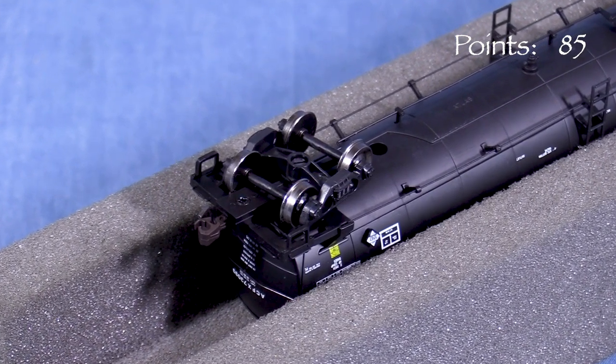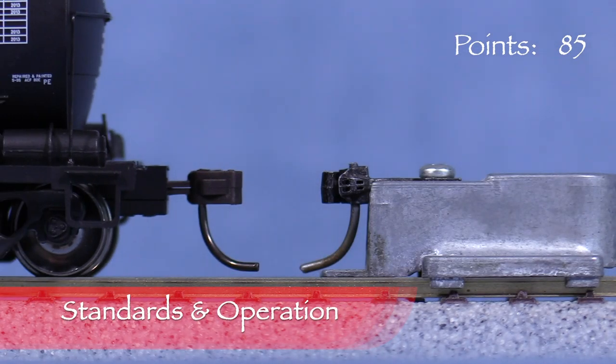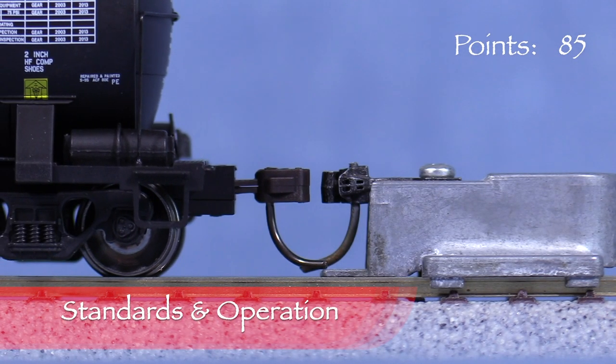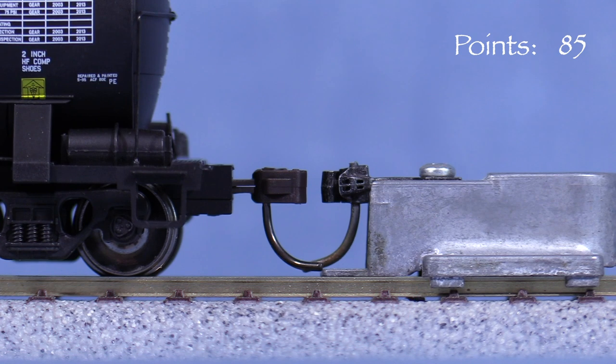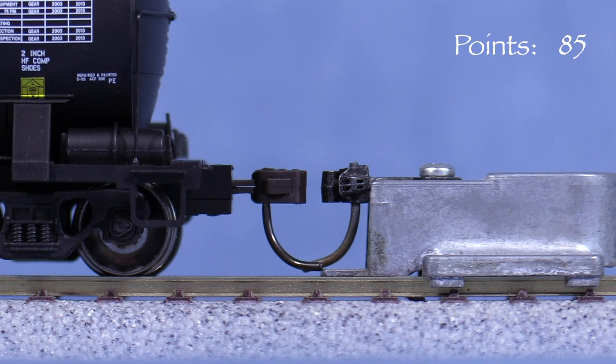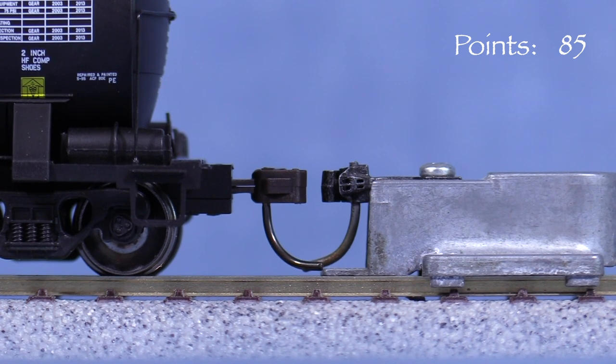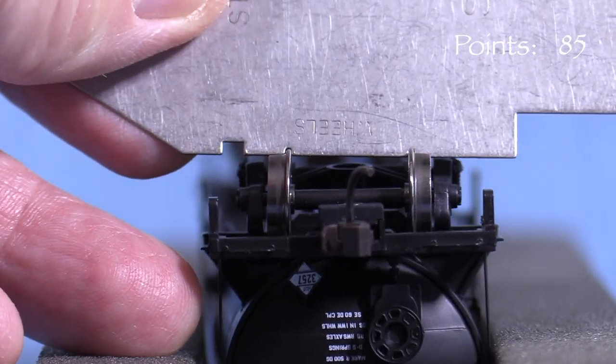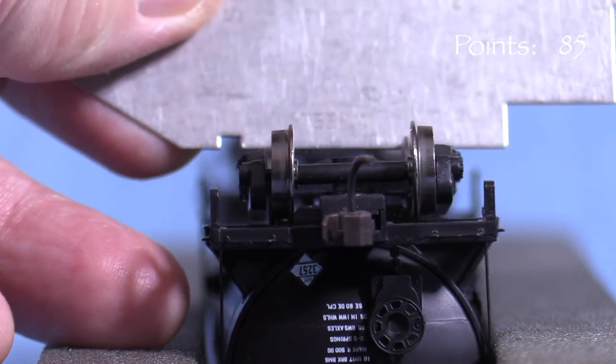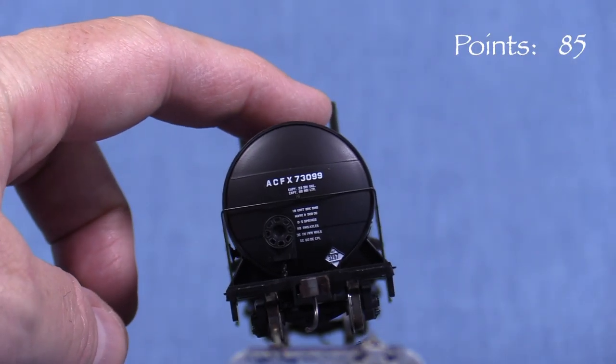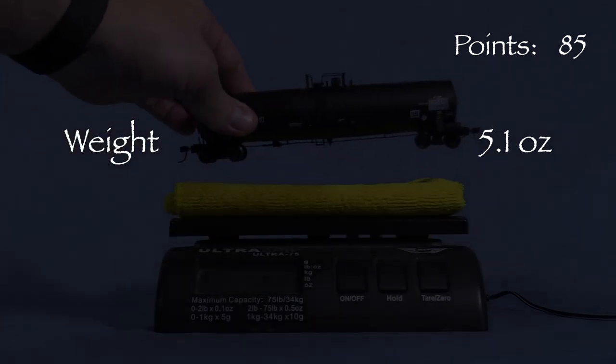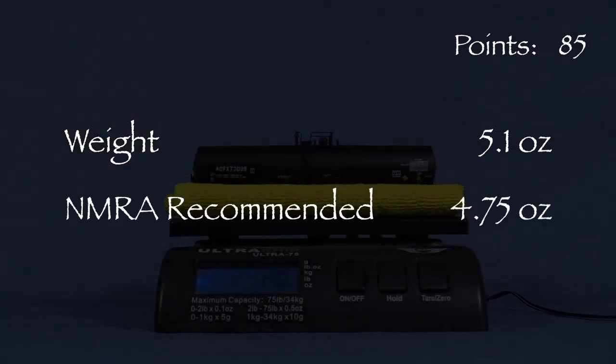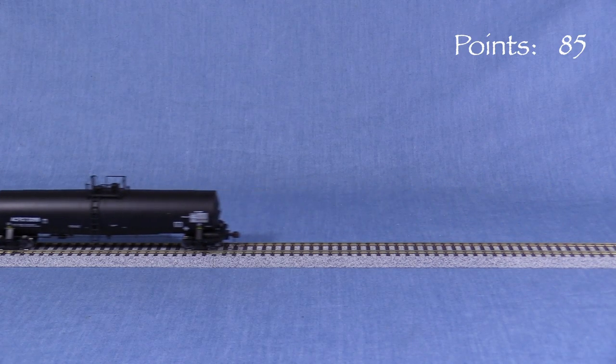The trucks have metal wheels with plastic axles. The car has plastic Accumate couplers on both ends. The coupler on the A end is at the correct height, though the trip pin is slightly low and hits the trip pin clearance tab on the height gauge. The coupler on the B end is also correct. All the wheels are in-gauge according to the NMRA standards gauge. There is no significant body wobble. The car weighs 5.1 ounces. The NMRA recommended weight for a car of this length is 4.75 ounces. A little extra weight should help the car to track better. The car is very free-rolling.